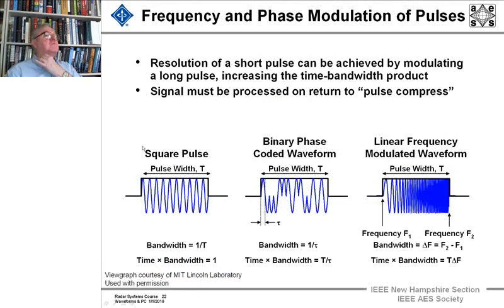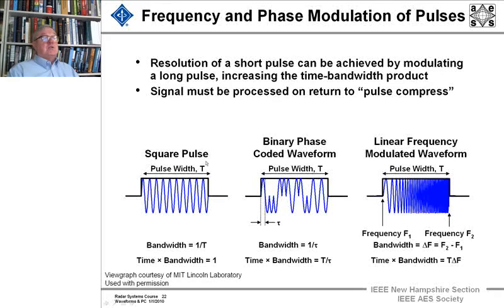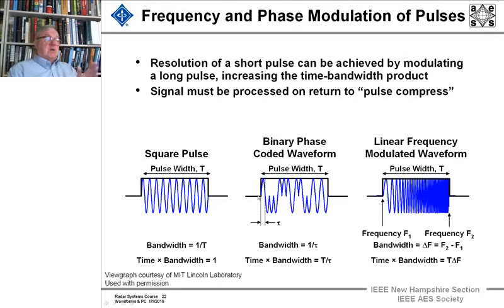Now let's define what we mean by binary phase coding and linear FM waveforms. First, the baseline waveform: it's a pulse of width T, and within that envelope you have a sine wave — that's the pulse of energy sent out. It's called a CW-modulated square wave. The bandwidth is 1 over the pulse length, and the time-bandwidth product is 1. The resolution of a short pulse can be achieved by increasing the time-bandwidth product. With binary phase coding, we flip the phase or don't flip the phase of a time portion of this pulse.